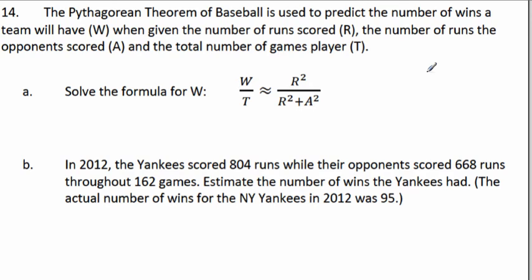Next question. Number 14. The Pythagorean Theorem of Baseball. This is actually really cool. Pythagorean Theorem of Baseball. Because here's what it does. If you take certain stats and you plug them in, you can predict how many wins the team will get. And I'll show you how accurate it is here. What do we got? The number of wins is W. And the number of runs that the team scores is R. And then you take the number of runs that the opponent scores. We'll call that A. And the total number of games that they played. Okay? So taking these three numbers, we have a relationship here: W over T is about equal to, that's what those wavy lines mean, approximately equal to R squared over R squared plus A squared.